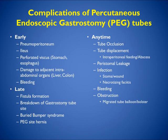Complications of PEG tubes can be divided into early and late, or anytime complications. Early complications include pneumoperitoneum, ileus, perforation, damage to adjacent organs, and bleeding. Late complications typically include fistula formation, breakdown at the gastrostomy site, buried bumper syndrome, or PEG site hernia. Early or late, you can see occlusion or displacement, peristomal leakage, infection, bleeding, or obstruction.